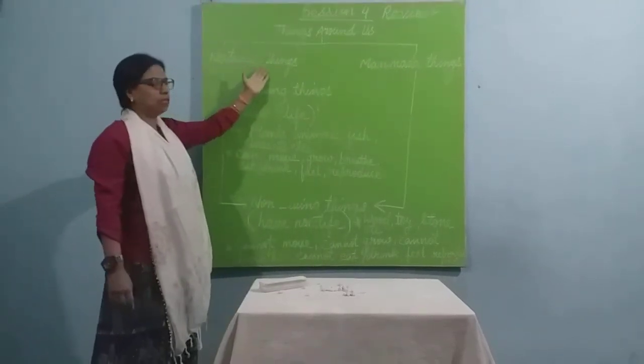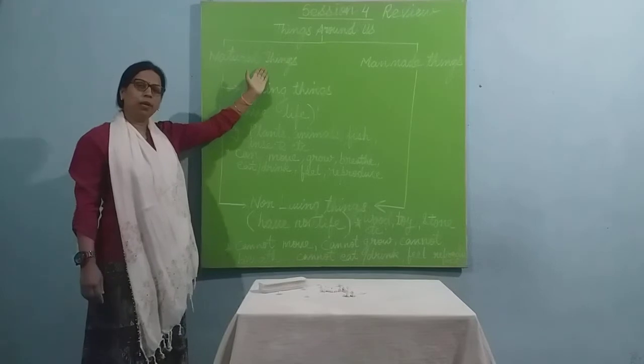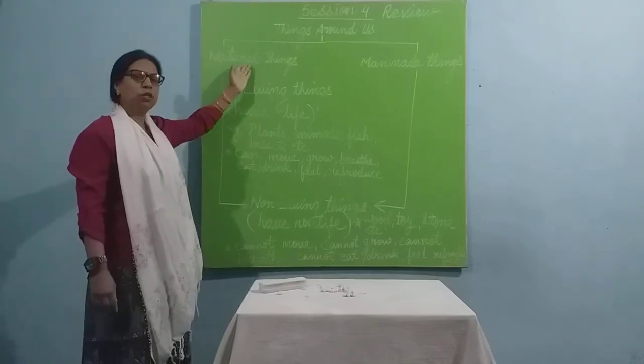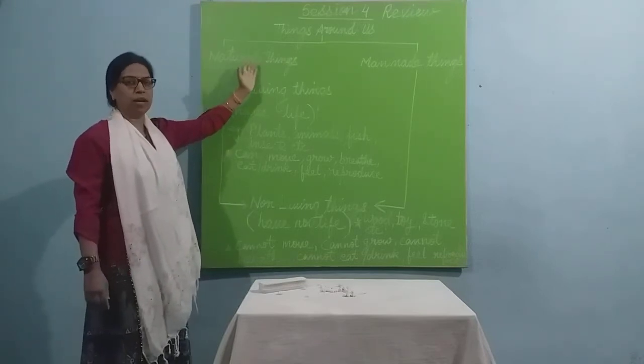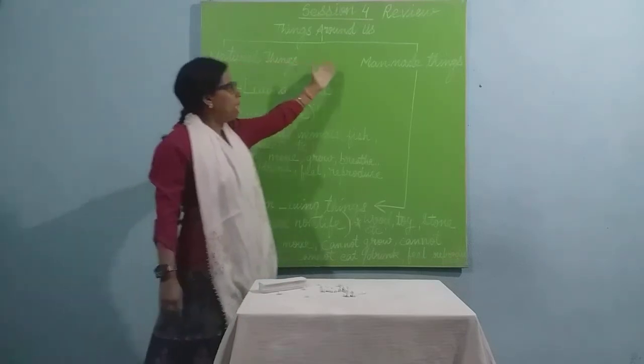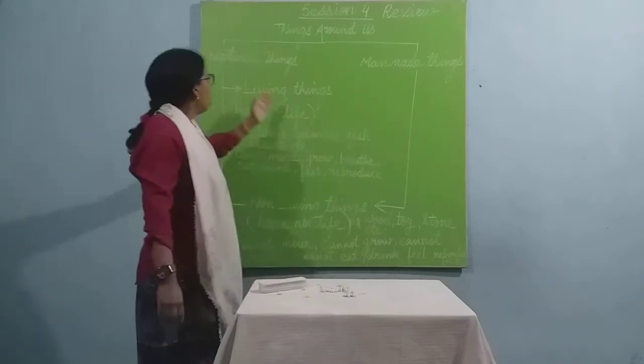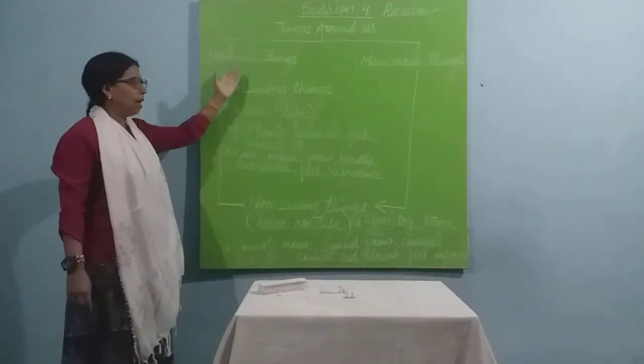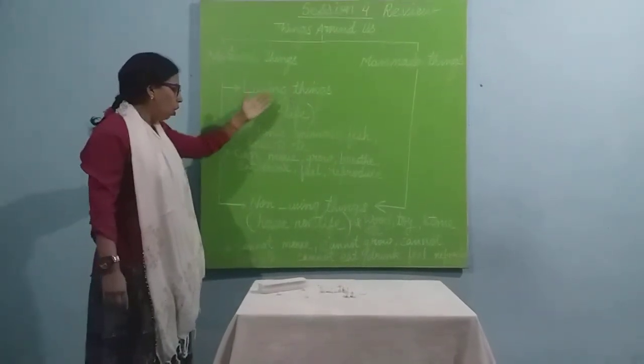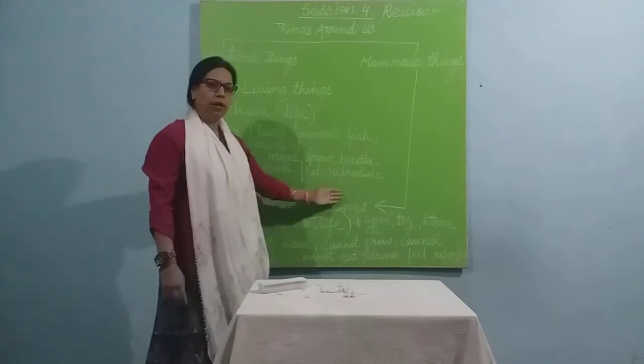Natural things are those things which we get from nature, which are created by nature, which are created by God and man-made things are made by man. The natural things can be a living thing or can be a non-living thing.